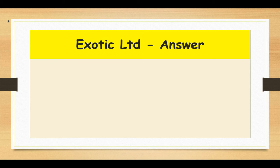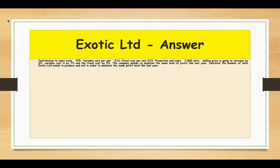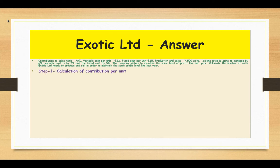We are going to do the Exotic Limited question. Contribution to sales ratio is 70%, variable cost per unit is 12 pounds, fixed cost per unit is 15 pounds, and production and sales is 7,500 units — this is the current year data. We need to calculate the current year's contribution per unit as Step 1, and then calculate the current year's profit as Step 2.